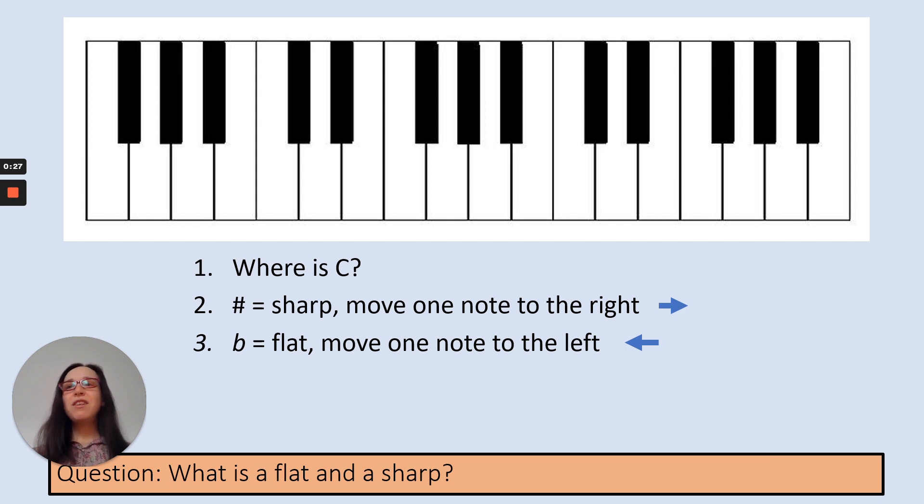So where is C? We've learnt C is to the left of the two black keys. So there's two black keys, there's three, there's two black keys. So C is to the left and it's this white note here. Now where you see a hashtag, that means sharp, and you need to move one note to the right. And where you see an italic lowercase b, that is flat and you're going to move one note to the left.